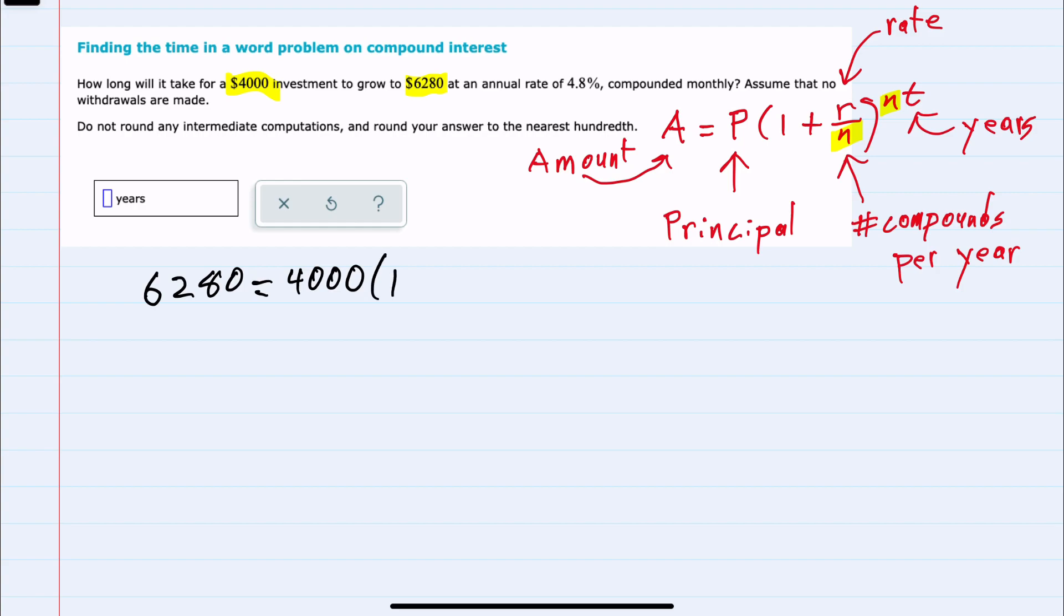which was $4,000, times 1 plus the rate. Our rate is 4.8% and I need to convert that to a decimal as 0.048 divided by N, the number of compounds per year. And since it's compounded monthly...